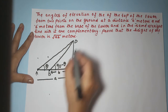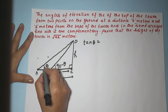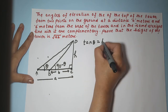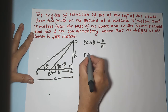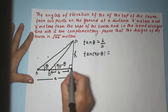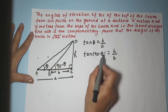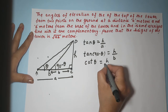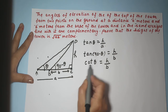Starting with tan theta: from the point A meters away, tan theta equals H upon A. Then for tan(90 minus theta): from the point B meters away, tan(90 minus theta) equals H upon B.